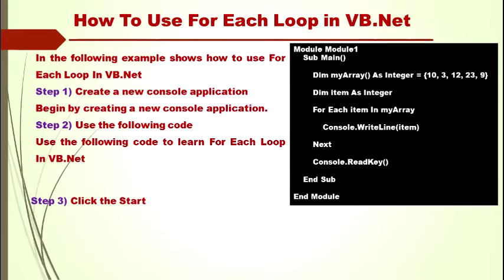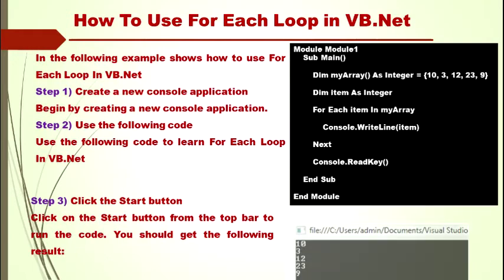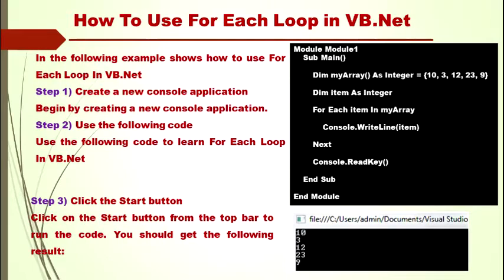Step 3: Click the Start button from the top bar to run the code. You should get the following result: 10, 3, 12, 23, and 9. So this is the use of For Each loop — we can use it to retrieve each individual value from a collection using the item variable. I hope you understand about For Each loop.